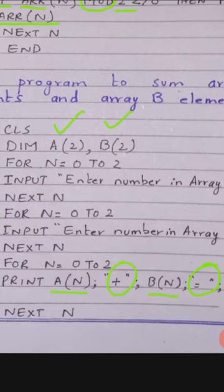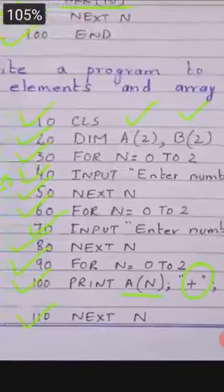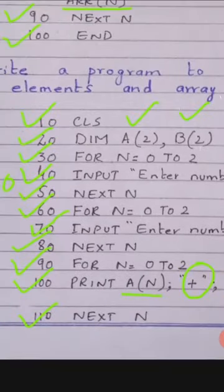جب n کی value 1 ہوگی تو next values plus ہوں گی اور screen پر print ہو جائیں گی، یہاں تک کہ n کی value 2 ہو جائے گی۔ آخری values add ہو کر screen پر display ہو جائیں گی۔ اس طریقے سے یہ loop چلے گا اور آخر میں جب last value 2 آ جائے گی تو loop terminate کر دے گا۔